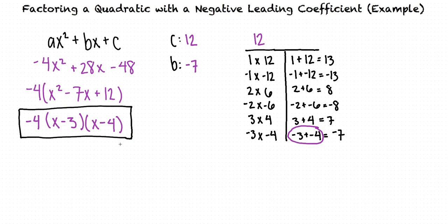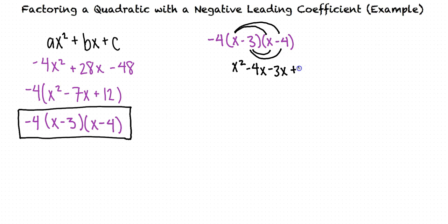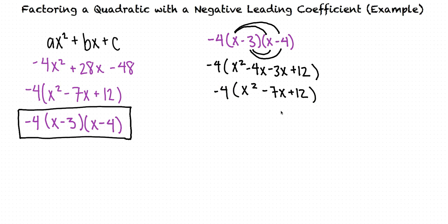Let's multiply everything out to make sure our answer is correct. We begin by FOILing the two quantities: x times x is x squared, x times negative 4 is negative 4x, negative 3 times x is negative 3x, and negative 3 times negative 4 is positive 12. We keep negative 4 out front. Combining like terms negative 4x and negative 3x gives x squared minus 7x plus 12, with negative 4 in front. Distributing the negative 4 gives negative 4x squared plus 28x minus 48, which matches our original expression, confirming our factorization is correct.